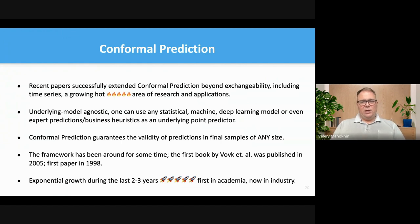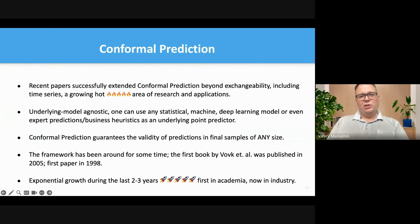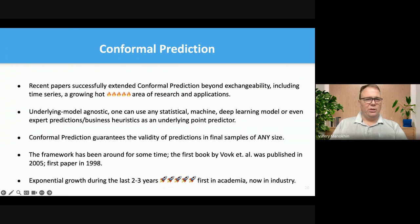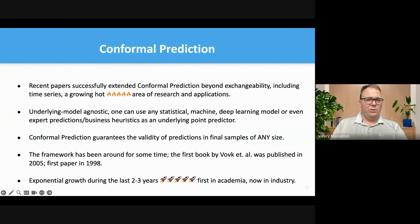For a long time, conformal prediction was a niche area — conferences were once per year and not very large. But there has been a lot of interest recently; it's a very fast-growing area of both research and applications. All top universities in the USA and Europe are doing research in it. Companies like NVIDIA are using conformal prediction, and there are many publications from DeepMind. It's becoming a very hot area of research — exponentially growing, every year. If you look at growth over the last three or four years on Google Trends, the growth is incredible.